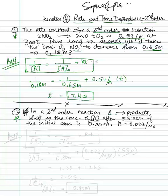In a second-order reaction of A to give products, what is the concentration of A after 55 seconds if the initial concentration is 0.80, and K is also given to us.